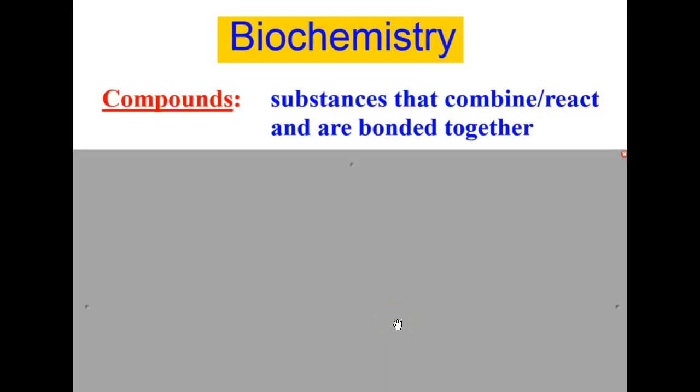In chemistry, the opposite of a mixture is a compound. Compounds are substances that combine or react and are bonded together. So the difference is that mixtures are not bonded, while compounds are bonded together.